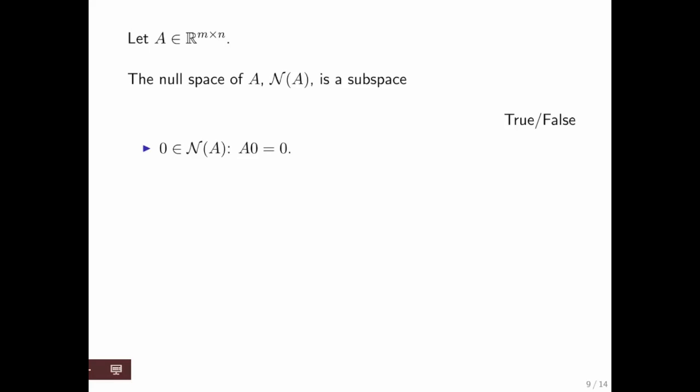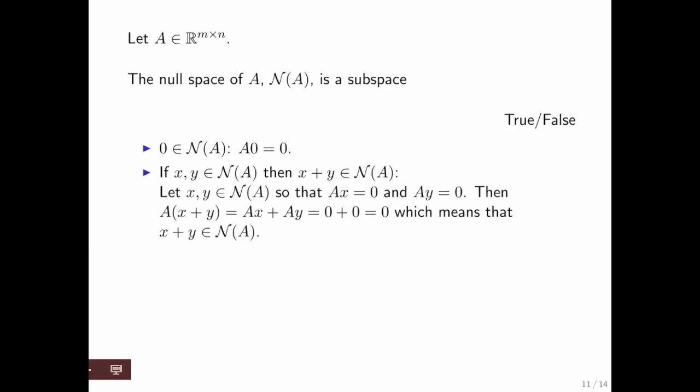And how do you prove that? Well, the 0 vector is certainly in the null space, because A times 0 is 0. If you have two vectors that are in the null space, then adding them together is also in the null space. Why? Because if you do A(x + y), you get Ax + Ay. But if each of these vectors is in the null space, then you know that's just 0 + 0, which is 0, which means that's in the null space.